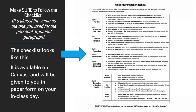The checklist for this assignment is still the same. This is going to be the last practice argument paragraph before our benchmark — before our big test argument paragraph. But this checklist is the exact same checklist you'll be expected to follow for your big benchmark test. I'm not trying to trick you. I'm trying to give you all the information you need to be successful and practice all of those steps before you even get to the test.